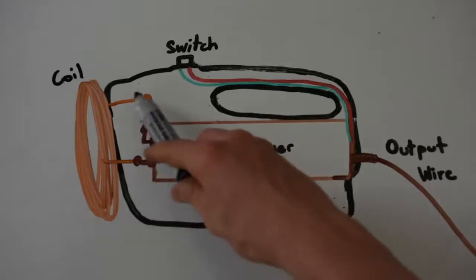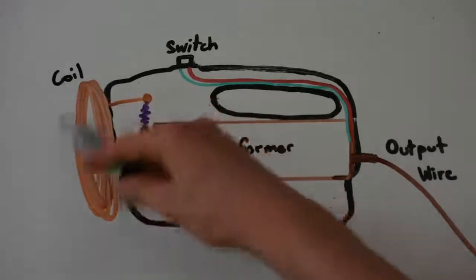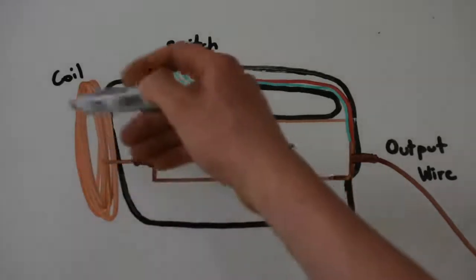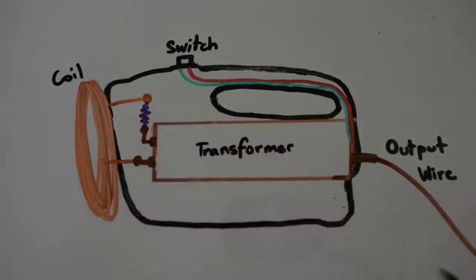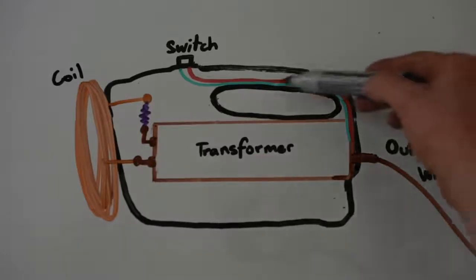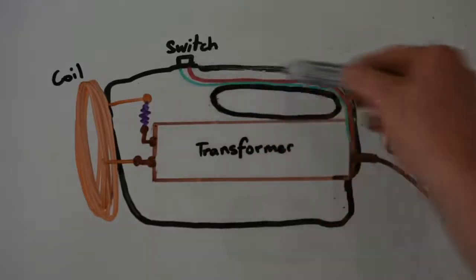This then leads to the magnetic copper wire coil which outputs the electromagnetic field. And then it links back into the transformer. And this is all controlled by the switch which were the two wires we were wiring up earlier.